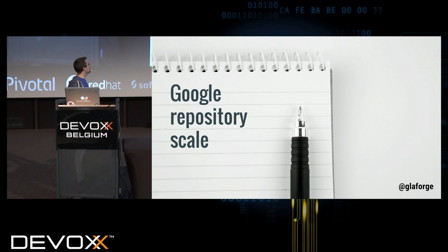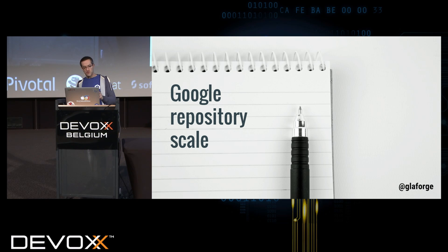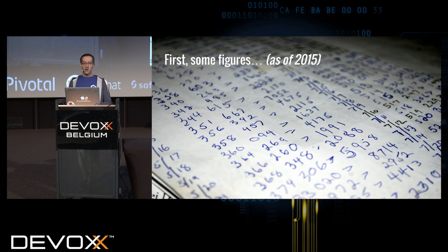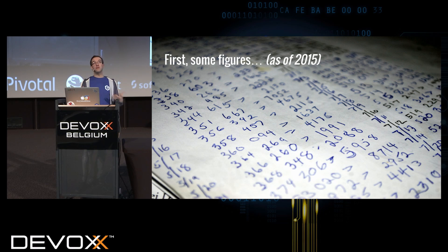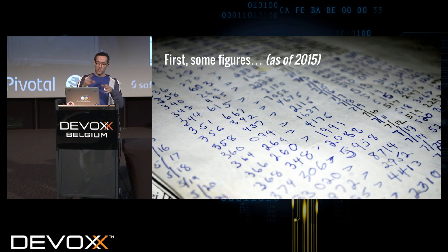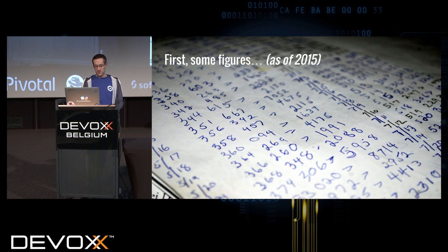First I'm going to give you a little idea of scale — the scale of that big, huge mono repository. The figures are at least the public known figures from 2015, so the figures you're going to see are not the very latest. The figures might be bigger now, so imagine even bigger figures than this.